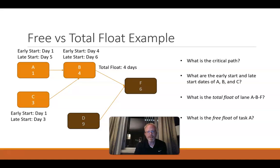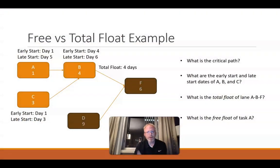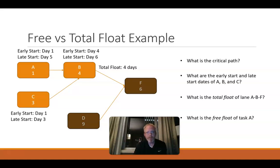What's the free float of task A? This is where things get interesting. Free float means how long can this task be delayed before it impacts the early start date of the subsequent activity. First, let's think about the free float of C. Free float of C is effectively zero, because if C gets delayed at all, task B cannot start on day four. But what about A? A is only one day and it's running parallel with C, which is three days.